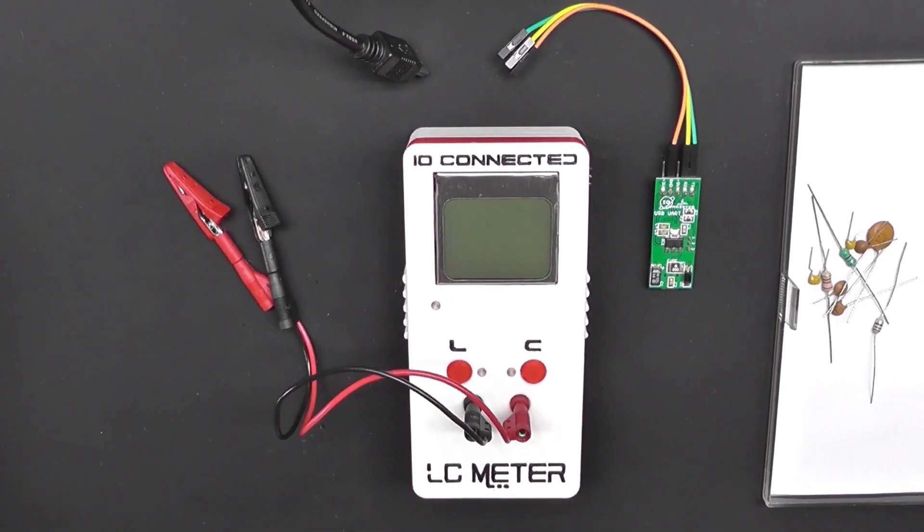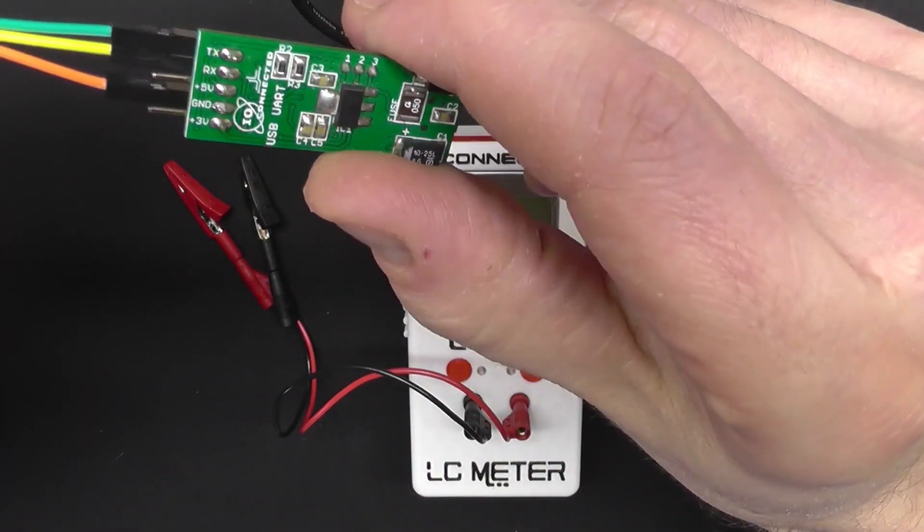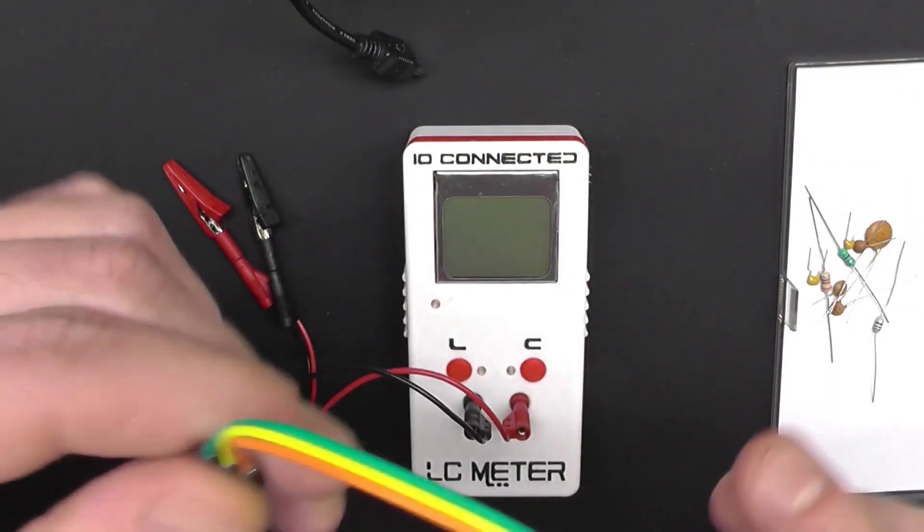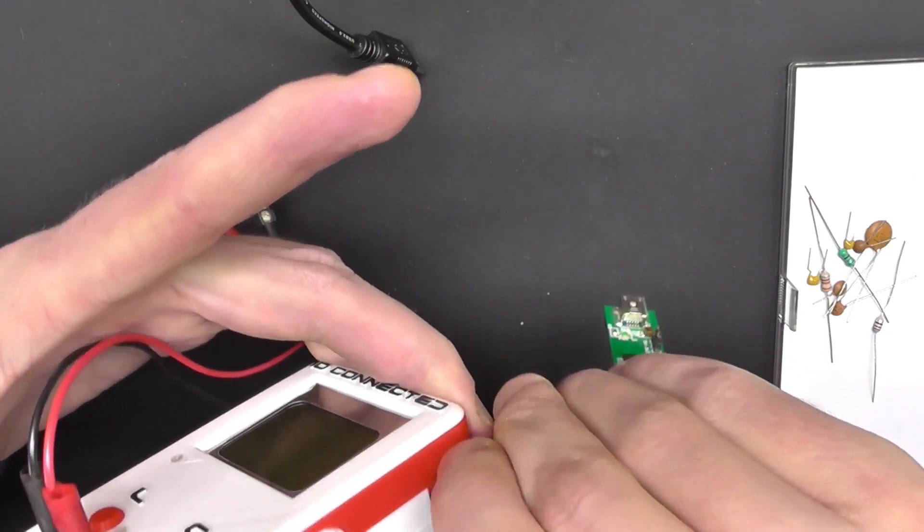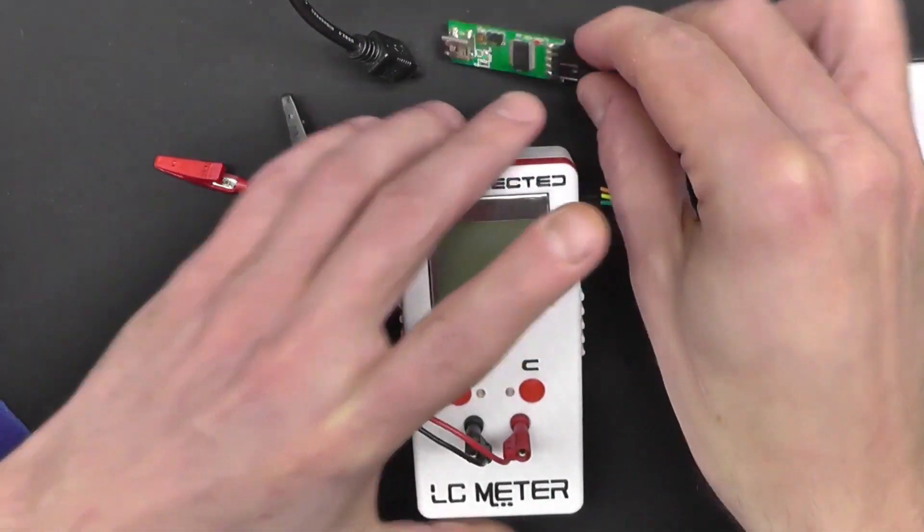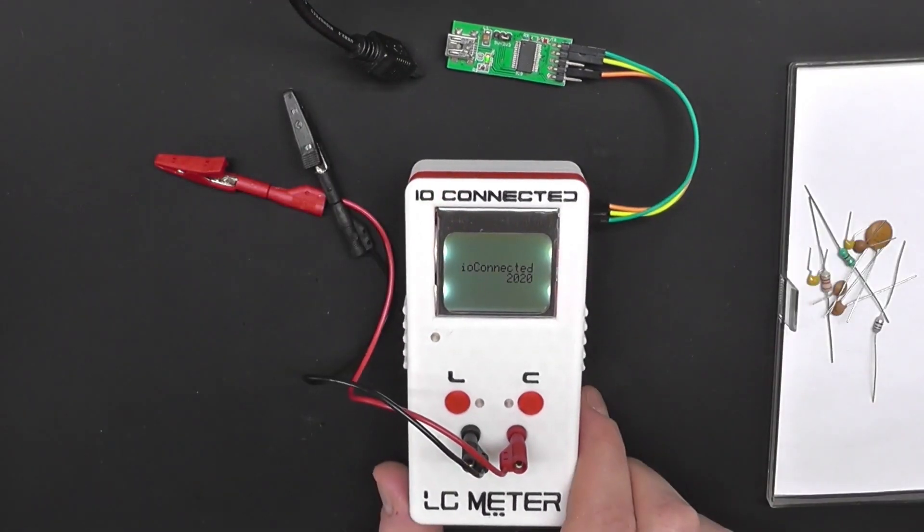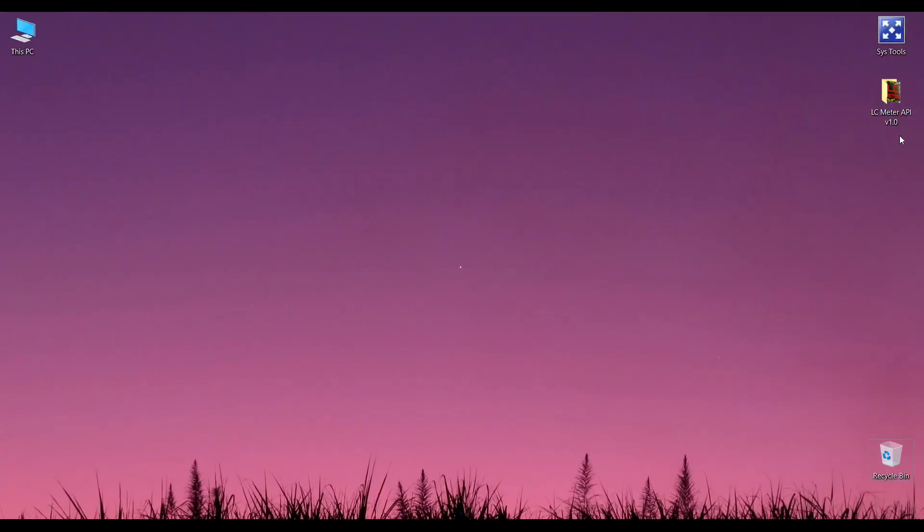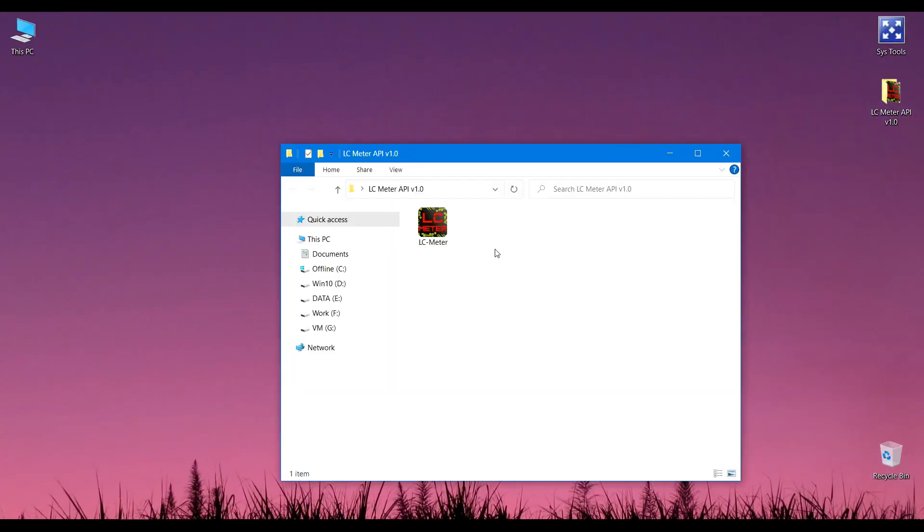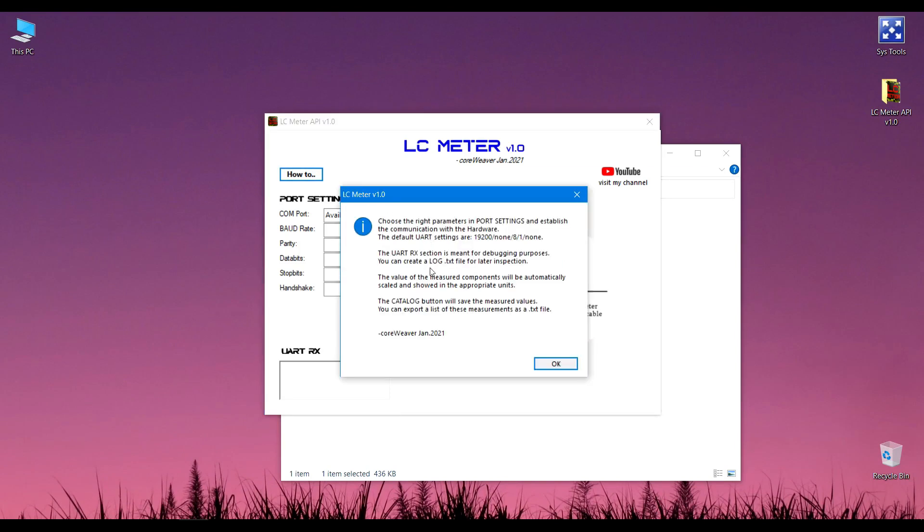I'm going to close this video series with the PC application for the LC meter, just like I promised you. I'm going to use this USB UART converter to establish the UART communication to my laptop. We're using TX, RX, and ground only. And before I plug this in the USB port, I'm going to start the application on my computer.